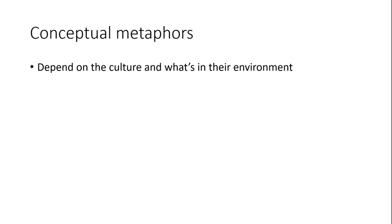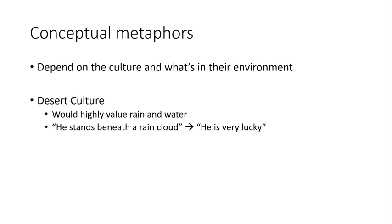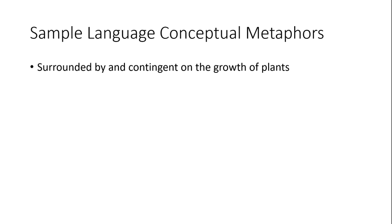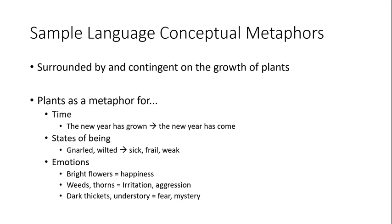Think about what your culture views as important and what's common in their environment. What kind of associations could these things elicit? For example, if you have a culture that lives in a barren desert, they'll likely regard rain with a high level of importance, and so you might see them equating rain with miracles or fortuitous events. Or if your culture lives on a chain of islands surrounded by a shallow sea, and they rely heavily on rafts or boats for transport, they could equate storms or rough waters with hard times. We've already said that the culture that speaks our sample language lives in a tropical forest. They're surrounded by vegetation and foliage, so what if they associate the growing of plants with other things, like time, states of being, or even emotions? We could even have different types of plants associated with different emotional states. Feel free to play around with these sorts of ideas, as they'll surface in interesting ways in your conlang and even inform some ideas about your culture.